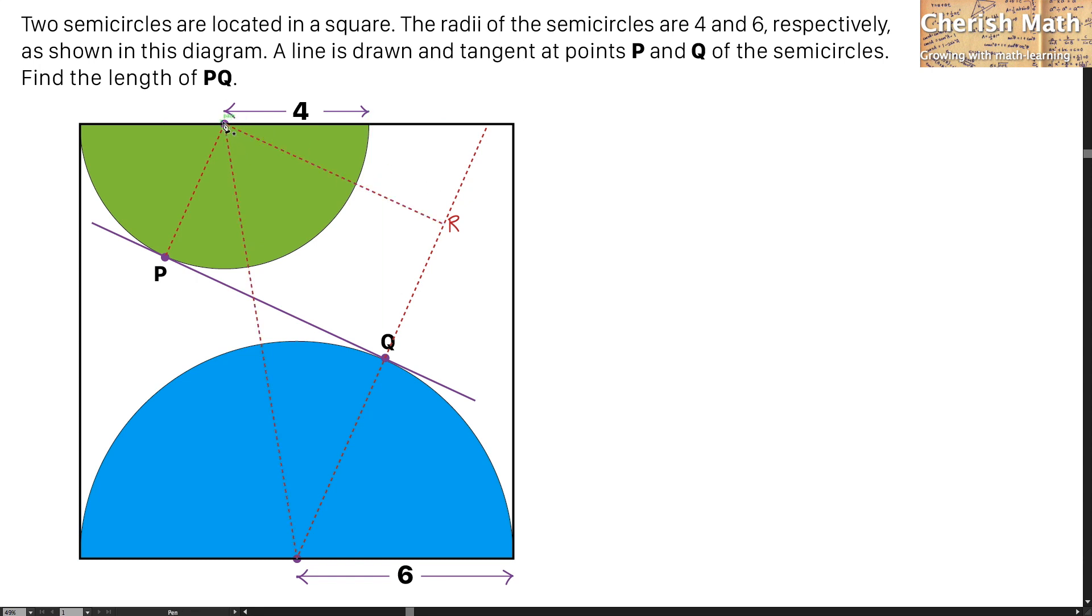And the next step, I'm going to draw a straight line right from the center of the green semicircle to the bottom of this square here. And it is right angle with the side bottom length of the square.